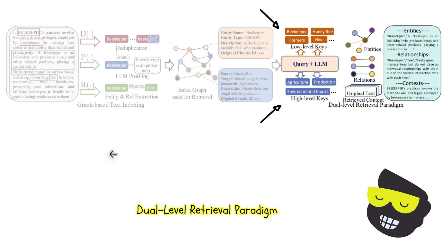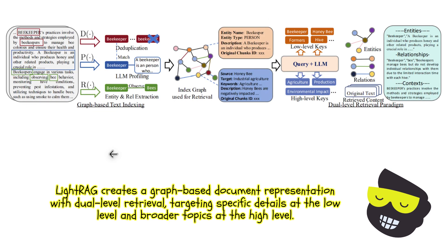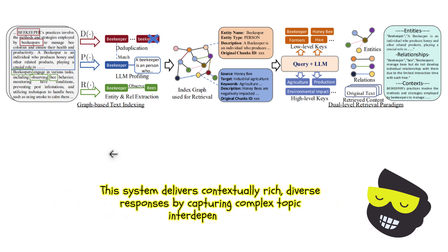The extracted entities and relationships are used to create an index graph showing how different entities are connected, allowing the system to quickly identify related concepts during retrieval. Finally, Light RAG employs a dual-level retrieval paradigm. The low-level retrieval fetches specific detailed information such as 'beekeeper' and 'honeybee,' while the high-level retrieval focuses on broader topics like agriculture and environmental impact. This combination ensures both granular details and high-level context are captured effectively.